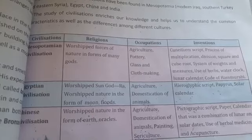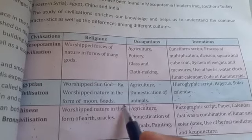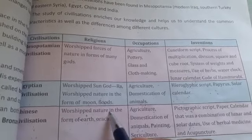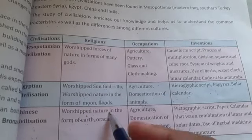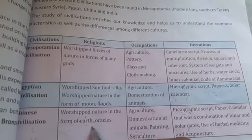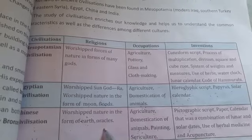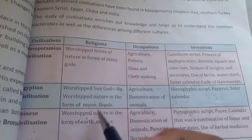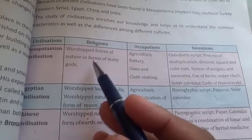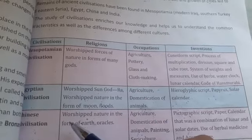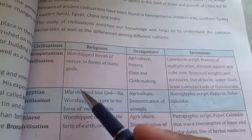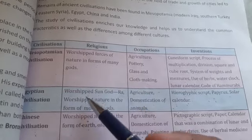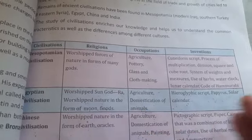In Chinese civilization, they also worshipped nature — in the form of the earth and oracles (divine prophecies). So here we see that in all three civilizations, nature was given great importance — nature worship is common to all three.